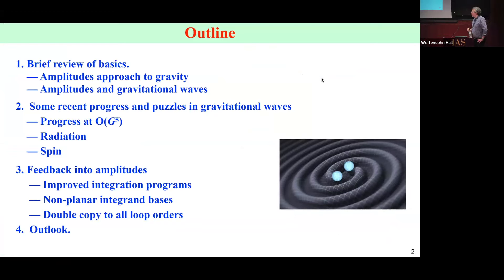But in fact they're really the same problem, and the reason is because of a separation of scales. If you're looking at the problem of black hole coalescence, as long as the black holes are well separated and you have long wavelength radiation, then for practical purposes these are points. If these are points, then it's in our wheelhouse. We can apply everything that we learned from quantum field theory to this problem of gravitational waves.